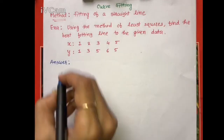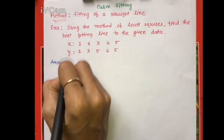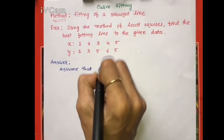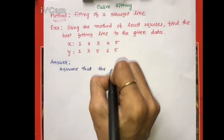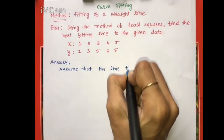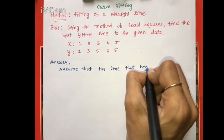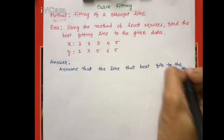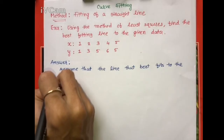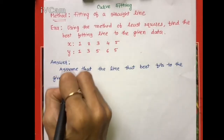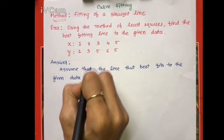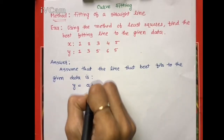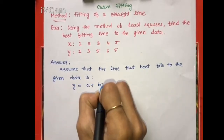First we assume that the line that best fits to the given data is y = a + bx. This is equation 1.